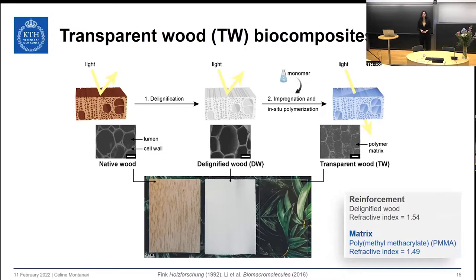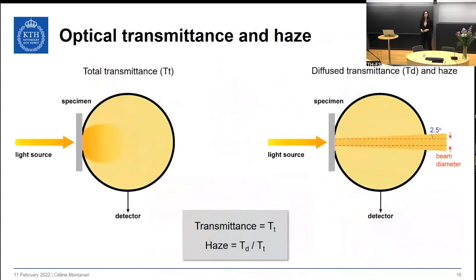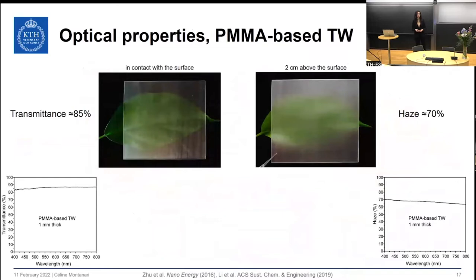Typically, polymethyl methacrylate or PMMA has been used as polymer matrix for transparent wood, because it has a refractive index of 1.49, which is close to that of the delignified wood substrate of 1.54. The optical properties of transparent wood have been characterized in terms of optical transmittance and haze, where transmittance corresponds to total transmitted light and haze corresponds to forward scattered light at wide angle. PMMA-based transparent wood combines high transmittance of 85% for 1 mm thick specimens and high haze of 70%.